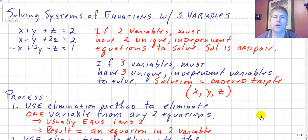Welcome back. Today, we're going to look at solving systems of equations with three variables. We might have the variables x, y, and z. Now, as we've seen in the past, if we have two variables, we must have two unique independent equations in order to solve, and our solution is an ordered pair. Well, if we have three variables,